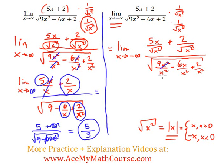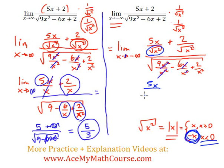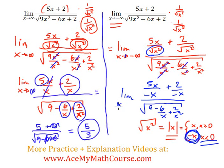Many things cancel out again. Now up top, something interesting happens: the square root of x squared, like we said, is actually going to become negative x. Why? Because we're taking the limit as x approaches negative infinity — x is negative, so x is smaller than 0, and we take the negative x branch. So we get 5x over negative x, plus 2 over negative x, all over the square root of 9 minus 6 over x plus 2 over x², as x approaches negative infinity.